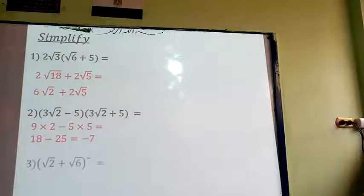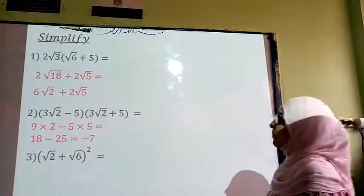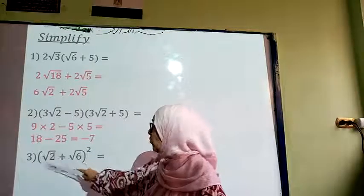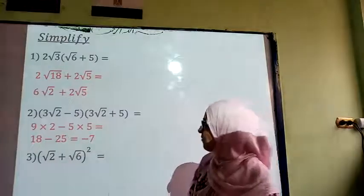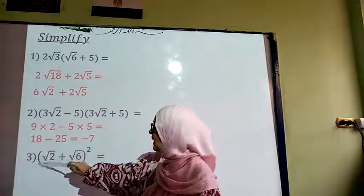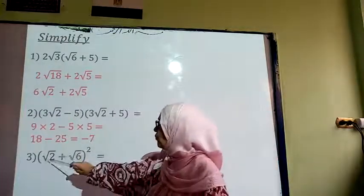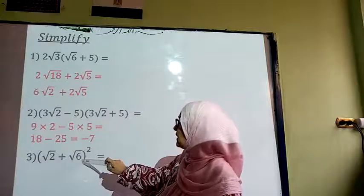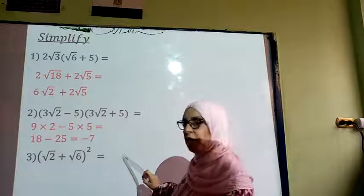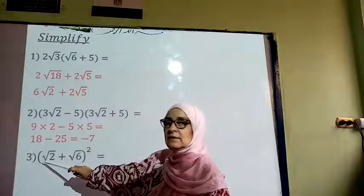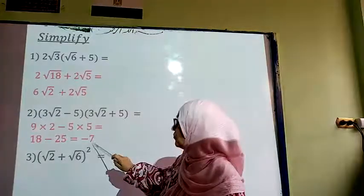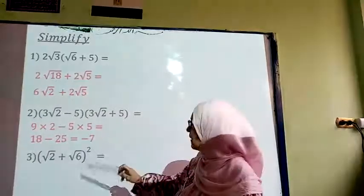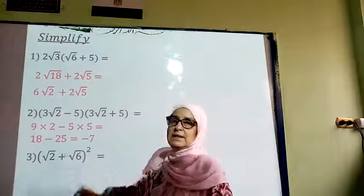So the final answer is negative 7. Now I have a bracket all raised to the power of 2. This means that I have (root 2 + root 6) multiplied by another bracket with the same numbers, because power 2 means you are multiplying the number by itself.